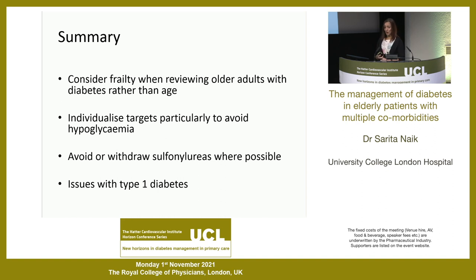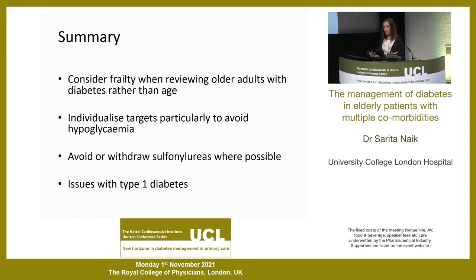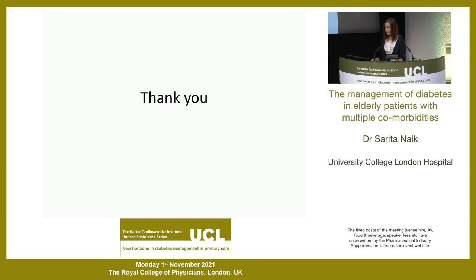In summary: consider frailty rather than age when reviewing older adults with diabetes, and individualize targets to avoid hypoglycemia — a higher HbA1c is generally better in this population. Avoid or withdraw sulfonylureas where possible, though it is a balance: if insulin is needed, consider who will administer it and whether district nurses need to be involved. The safety profile of long-acting insulins is generally better than sulfonylureas. Think more about type 1 diabetes issues as more elderly patients with long-standing type 1 are presenting with these challenges.